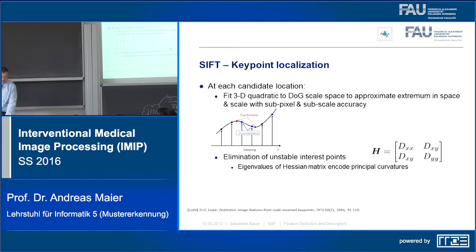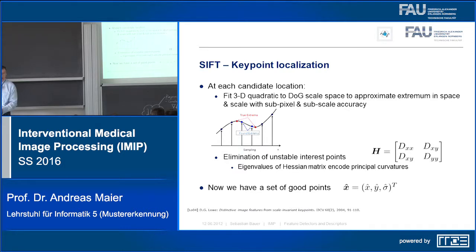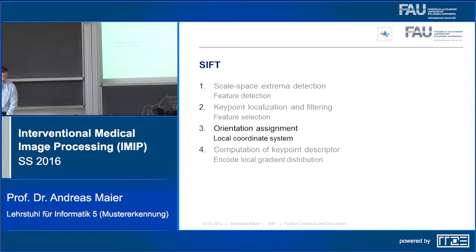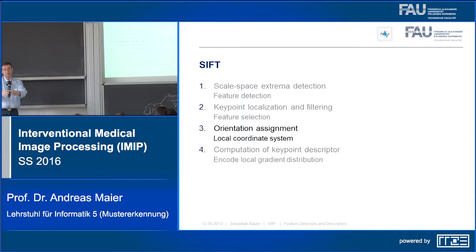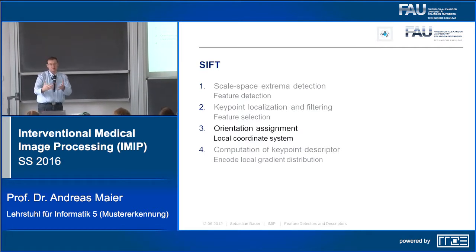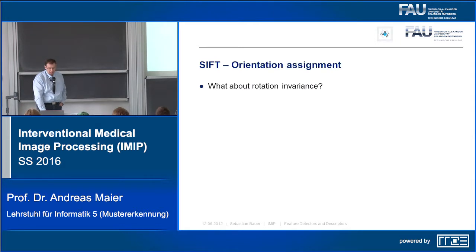You can then eliminate unstable interest points by computing the eigenvalues of the Hessian matrix to find good blob-like points. Each good point has an x, y coordinate and a scale. The next step is to determine the orientation of the point, so that if someone tilts their head or an image is rotated, you can still identify the same features.